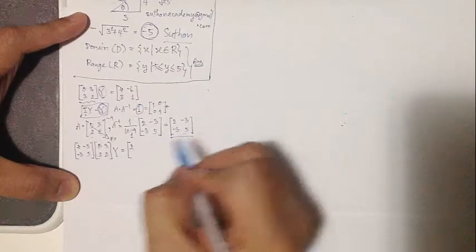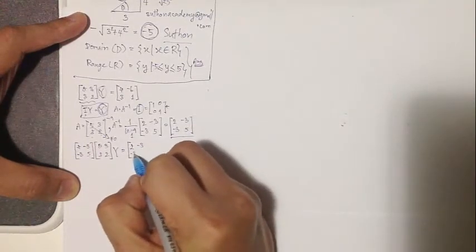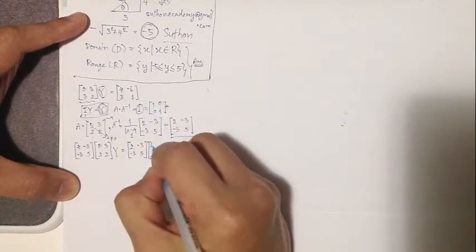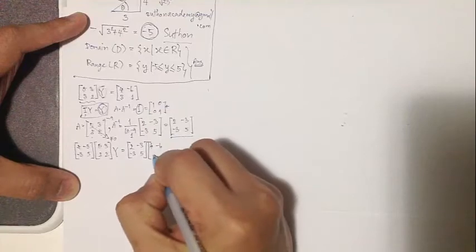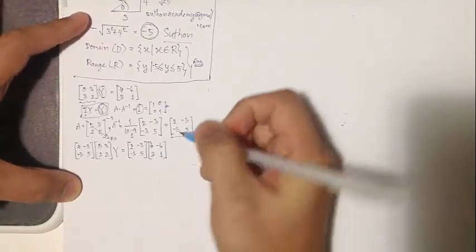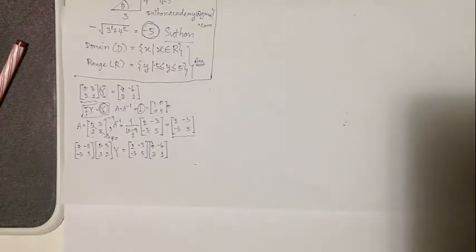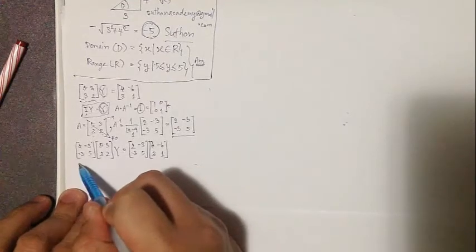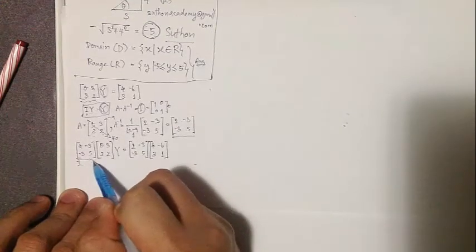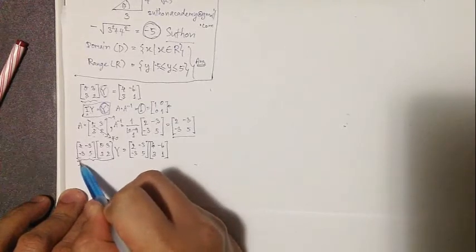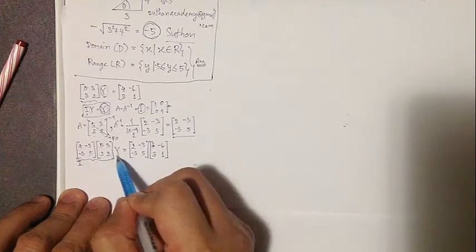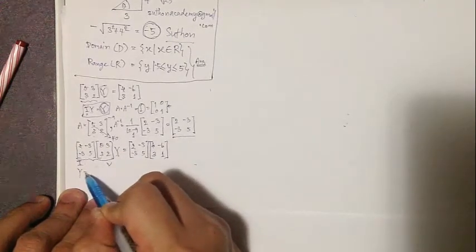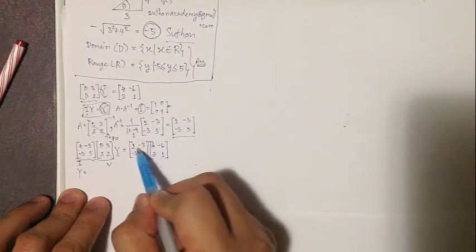And Y equals [2 -3; -3 5] times the matrix [4 -6; 3 1]. So from the equation, we know that these two matrices multiply each other and become the identity matrix, so identity matrix times matrix Y equals matrix Y. So we can write down that matrix Y equals what we calculate from this.